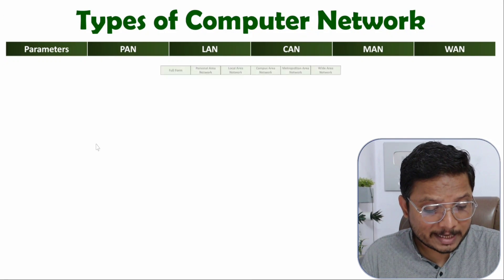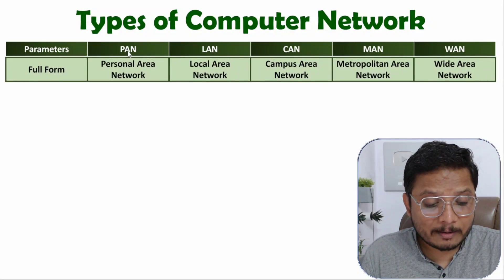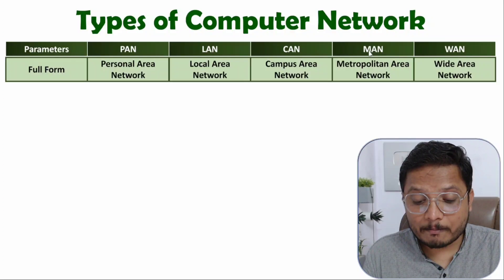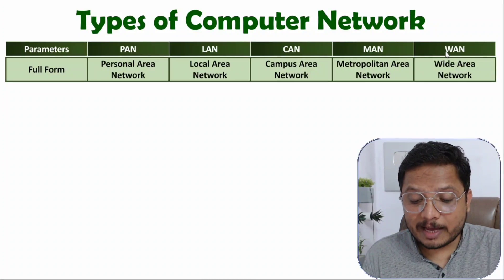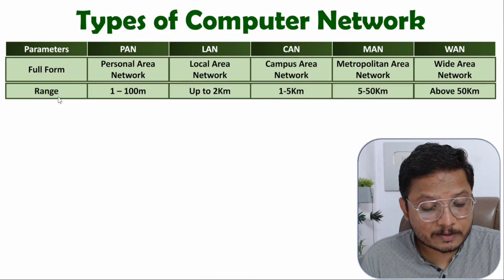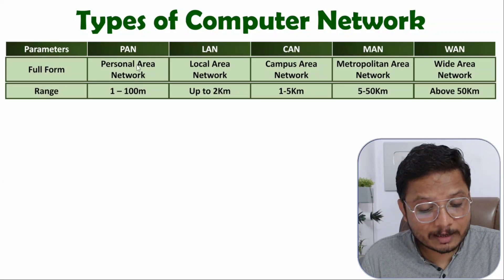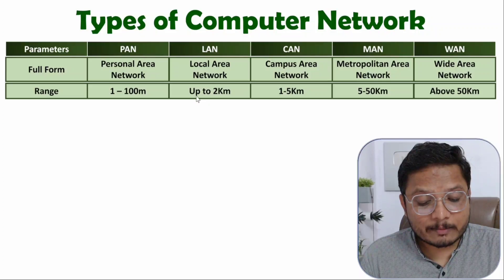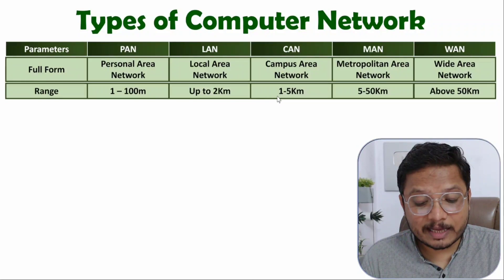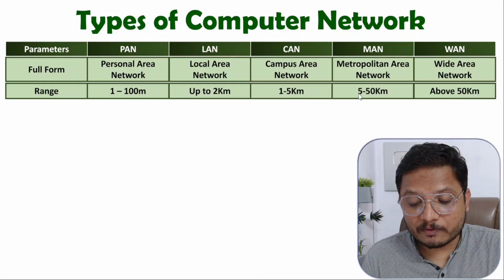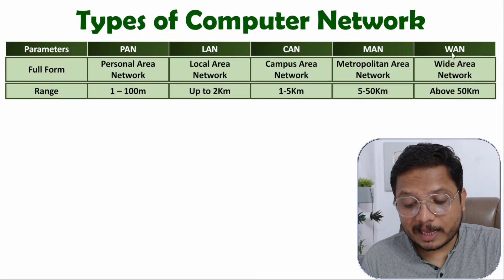PAN means Personal Area Network, LAN means Local Area Network, CAN means Campus Area Network, MAN means Metropolitan Area Network, and WAN means Wide Area Network. Personal Area Network has a range from 1 to 100 meters. Local Area Network has a range up to 2 km. Campus Area Network has a range from 1 to 5 km. Metropolitan Area Network has a range from 5 to 50 km. And above 50 km, we have Wide Area Network.